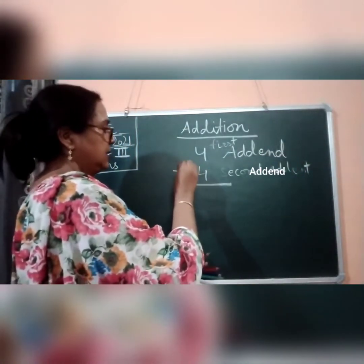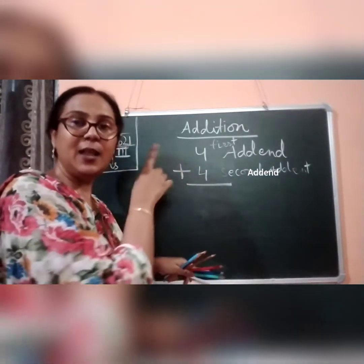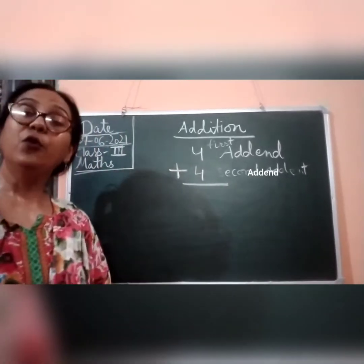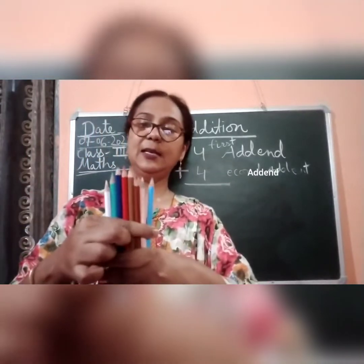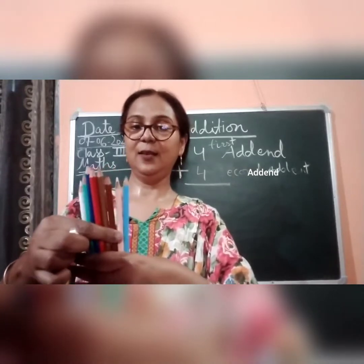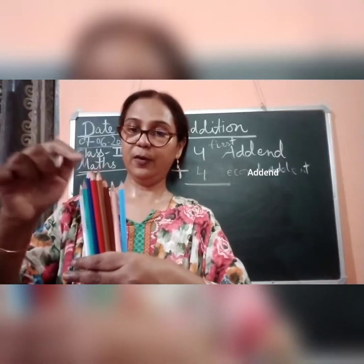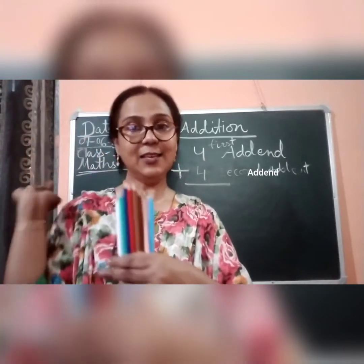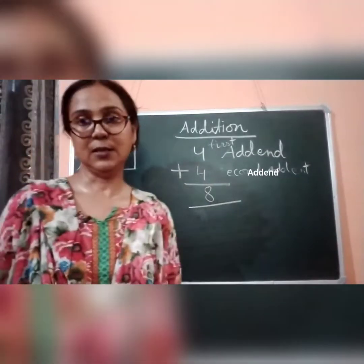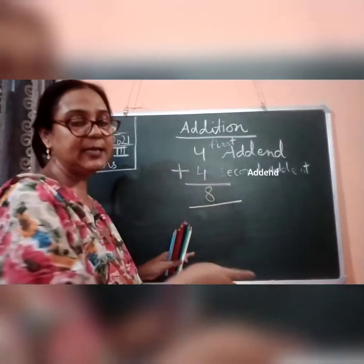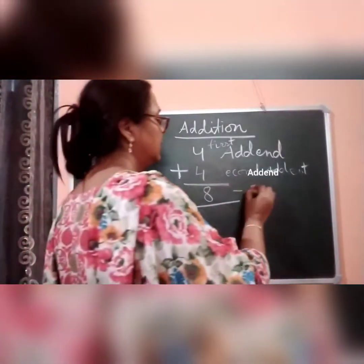Now we should add these four and four together. We can count easily: one, two, three, four, five, six, seven, eight. I have a total of eight pencils. This total — the result obtained by addition — is called the sum.